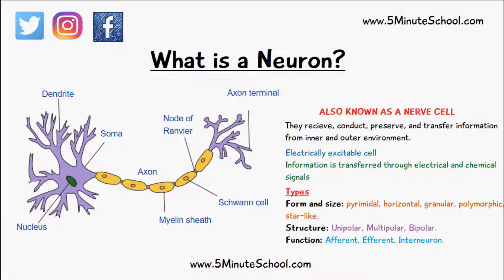This diagram here on the left shows you what a neuron or a nerve cell actually looks like. This part here is known as the soma, so you can consider it as the head of the nerve cell or the neuron.